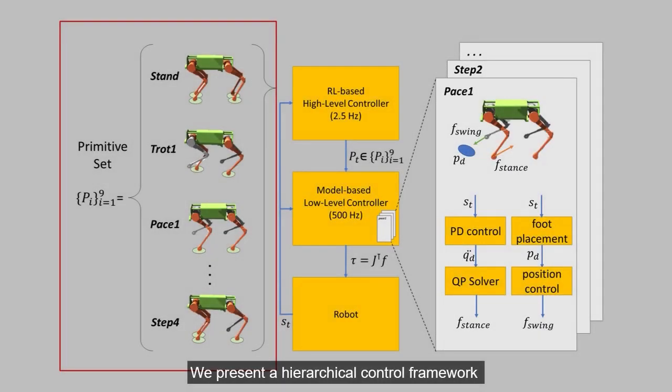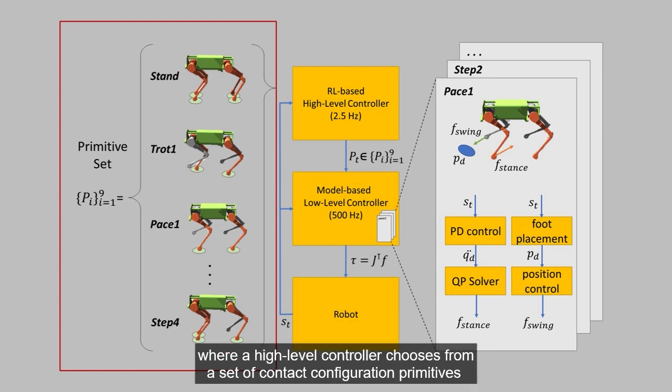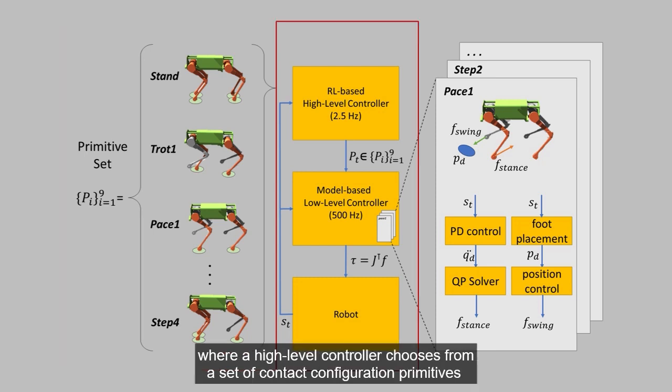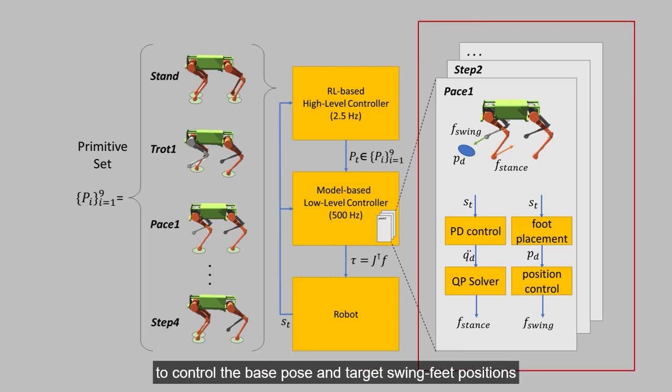We present a hierarchical control framework, where a high-level controller chooses from a set of contact configuration primitives. The model-based low-level controller computes the motor torques to control the base pose and target swing feet positions.